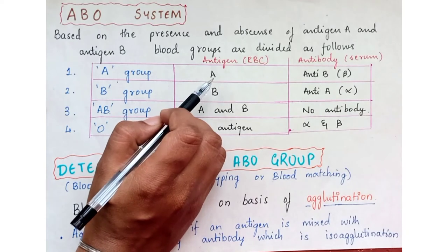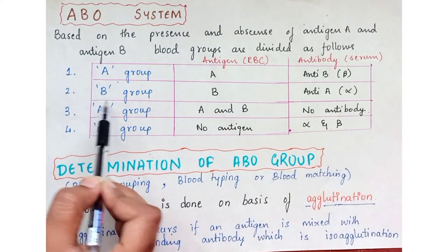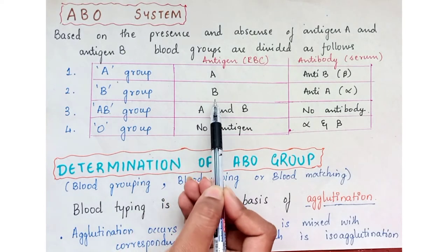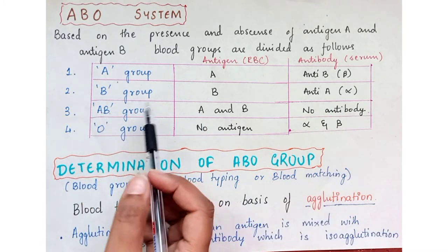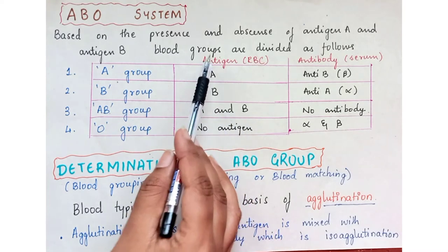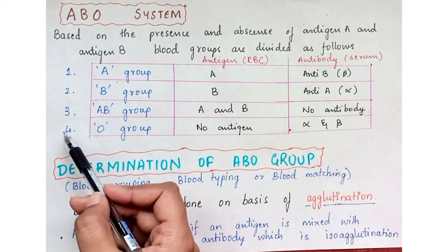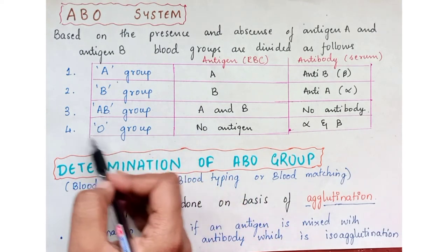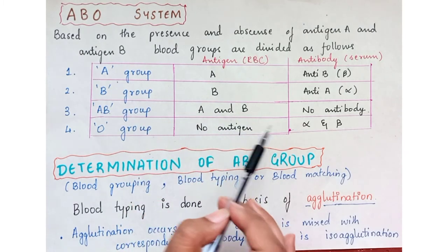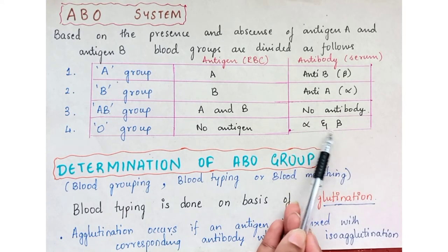In Group A, RBCs have antigen A and since anti-A cannot be present, anti-B is in the serum. In Group B, antigen B is present and anti-A is in the serum. In Group AB, both antigen A and antigen B are on RBCs and no antibodies are present. In Group O, there is no antigen and both anti-A and anti-B are present in the serum.